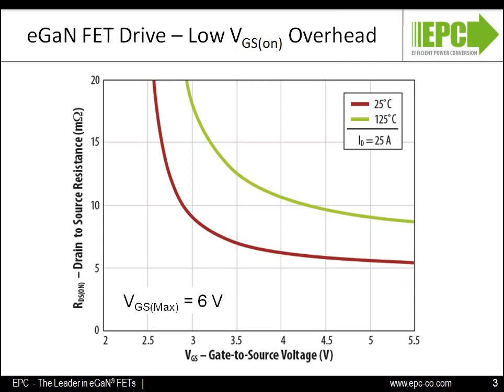Here we can see the device on-resistance versus gate voltage for a typical part. We can see that the on-resistance is pretty flat beyond four to four and a half volts. If we add to this the requirement that the gate voltage must never exceed six volts, then this leaves a gate drive voltage range of between four and five and a quarter volts, with the best drive voltage between four and a half and five volts.